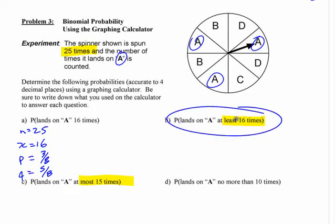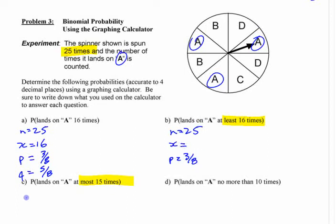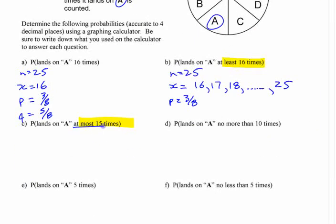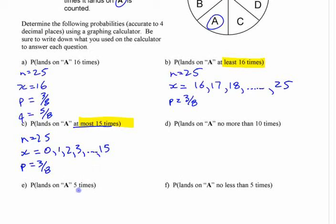In this case, n is still 25 times, p is still the same, q is still the same, but what would x be? Here, x is a lot of different things — 16, 17, 18, up to 25. What about 'at most 15'? n is still the same, p is still the same. What's x? What numbers are we looking at here? 0, 1, 2 ... 15. There's a lot of different cases.